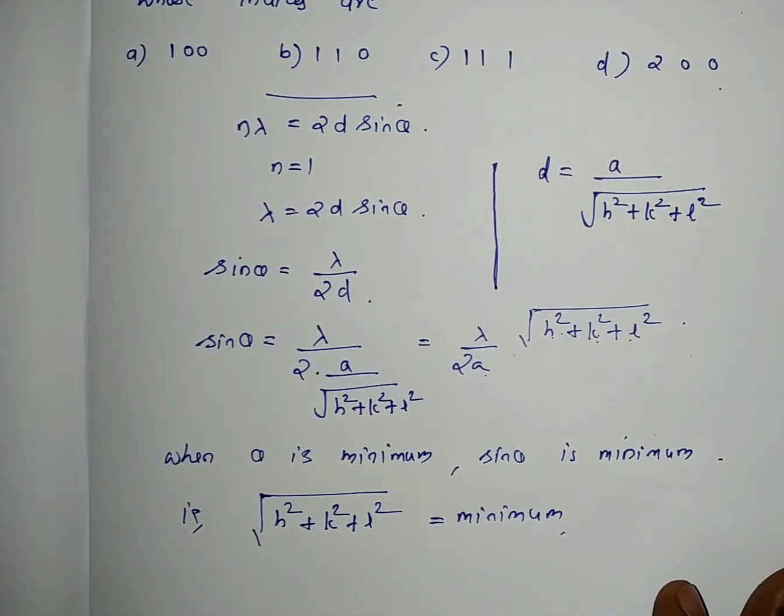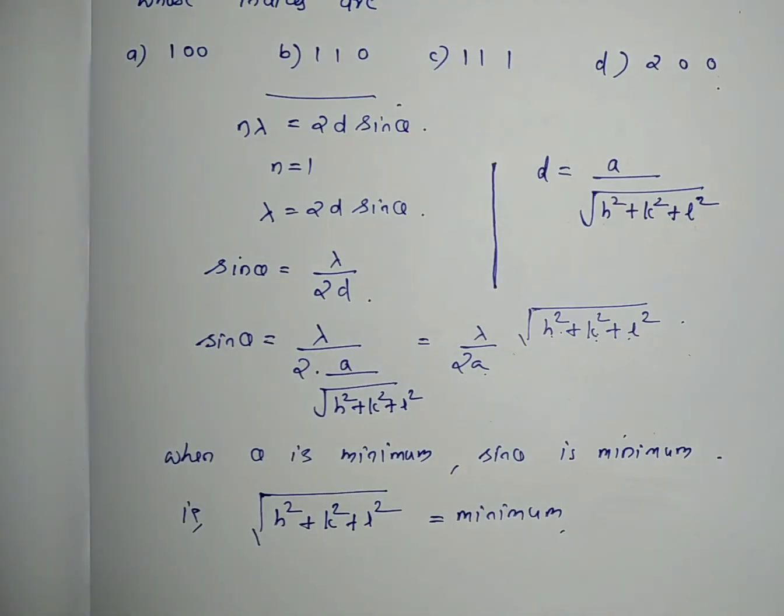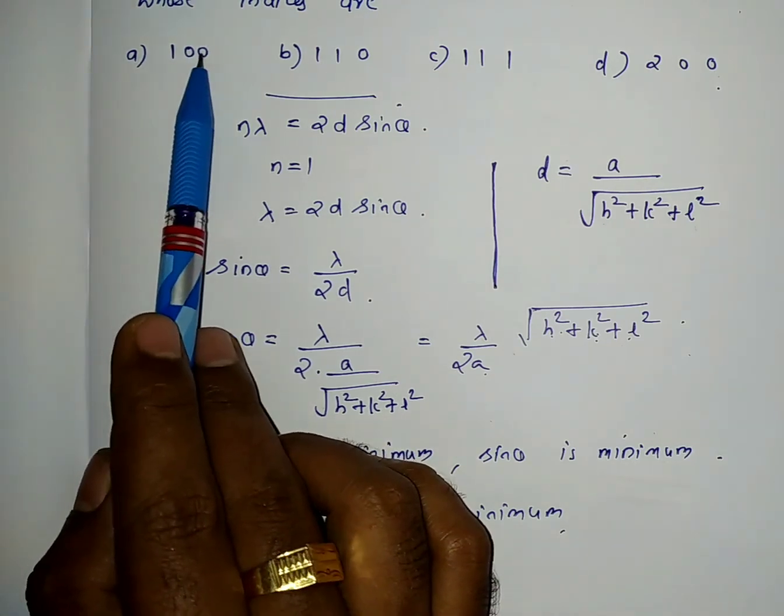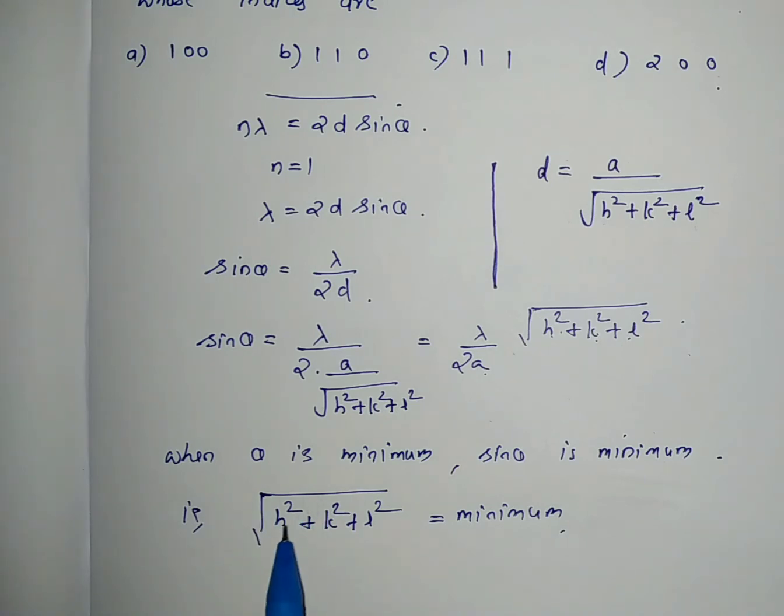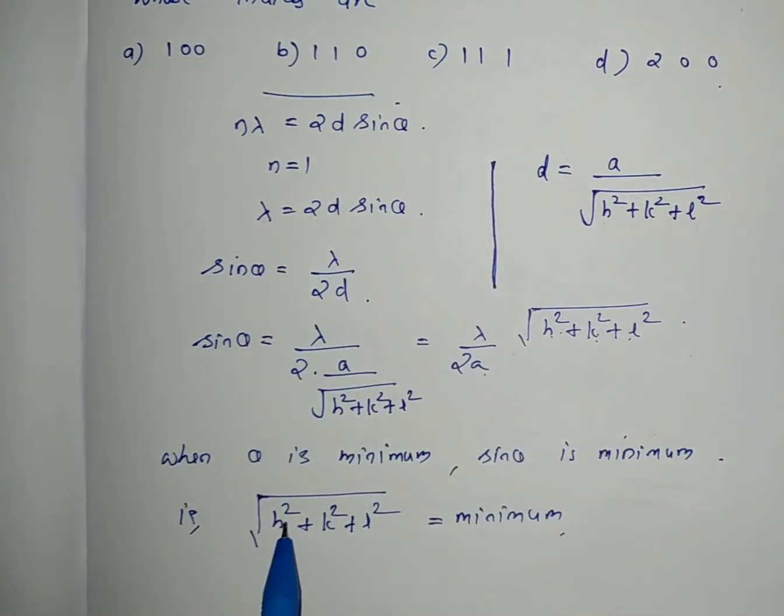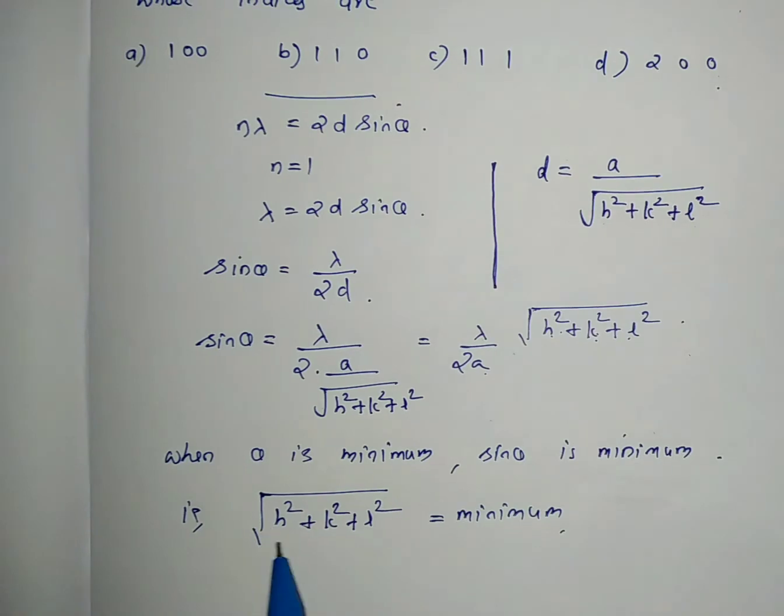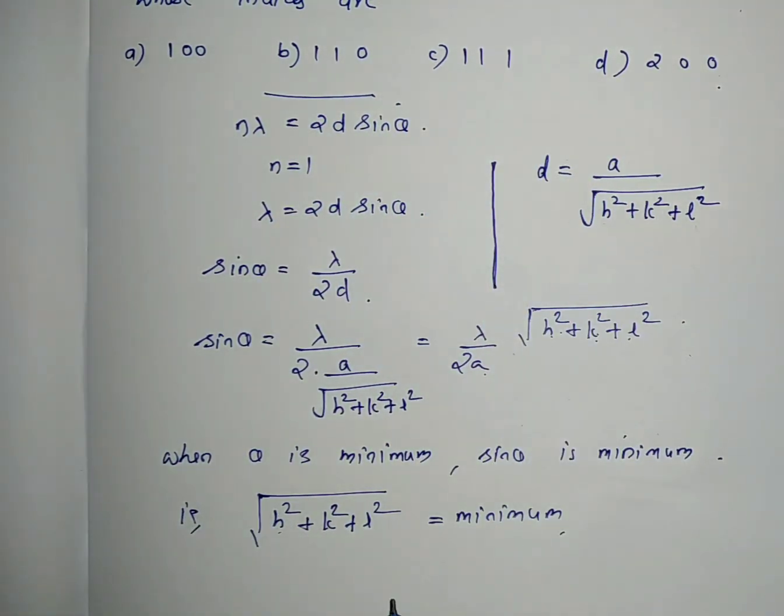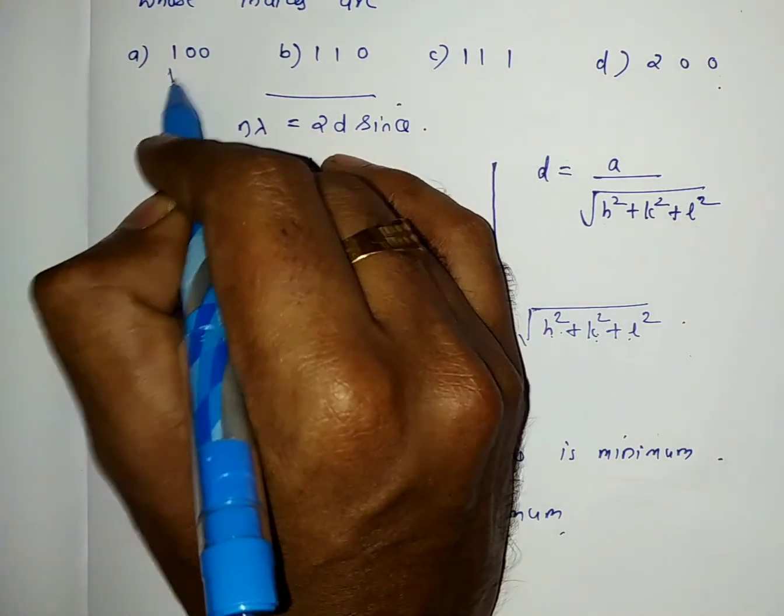Let's evaluate the options. For 100: the square root of 1² plus 0² plus 0² equals 1. For 110: the square root of 1² plus 1² plus 0² equals square root of 2. For 111: square root of 3. For 200: the square root of 2² equals 2. So the minimum value is 1, corresponding to Miller indices 100.